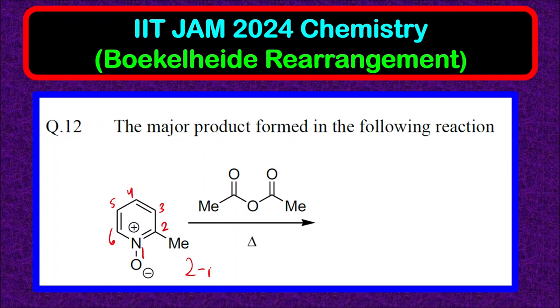So, 2-methyl at the second position. Then if you see benzene ring with one nitrogen as the heteroatom, this is pyridine.